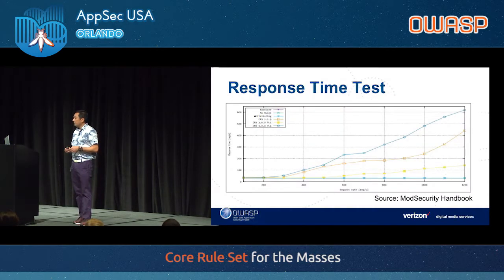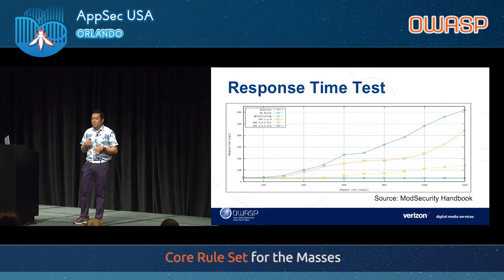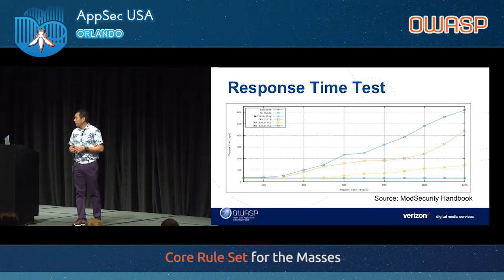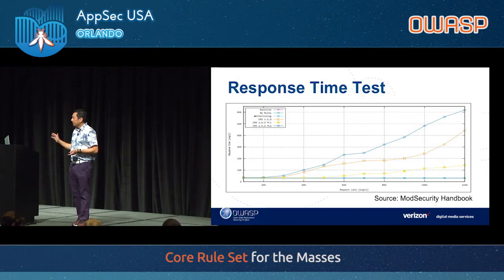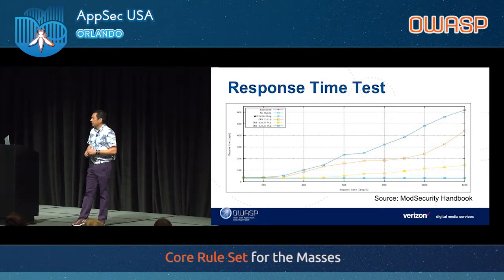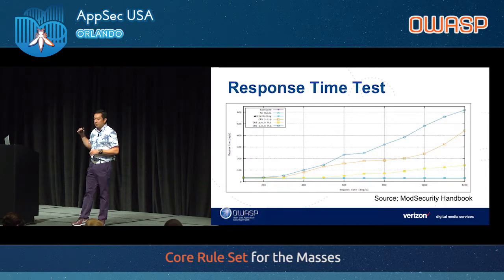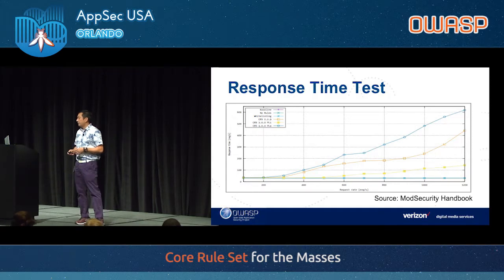Mod security performs pretty well depending on how you use it. This graph is from the mod security handbook written by Christian Poehlina, which just came out a couple of months ago. CRS 3.0 has the paranoia level feature, and the performance is pretty good, but at some point you start hitting performance issues, so you need to find that balance.